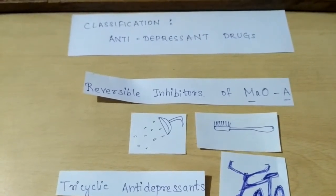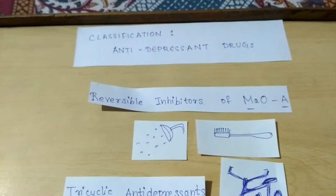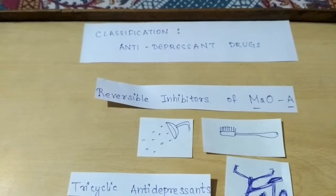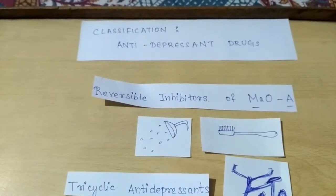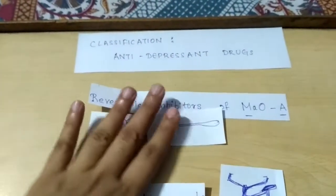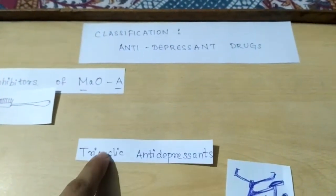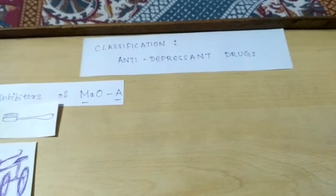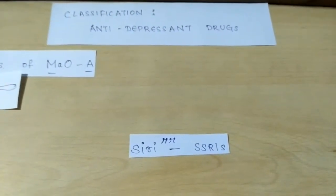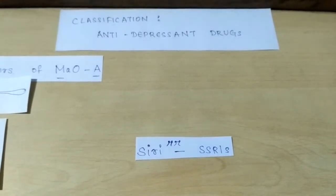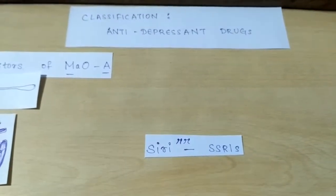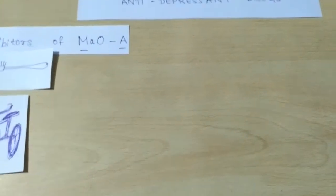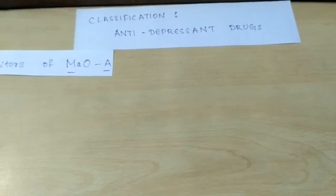The first class is reversible inhibitors of MAO, which are the mitochondrial enzymes usually involved in oxidative deamination of biogenic amines. The second class is the tricyclic antidepressants, represented by riding a tricycle. The third class is Siri, which represents SSRI — selective serotonin reuptake inhibitors. The fourth class is being atypical, that is being unique.